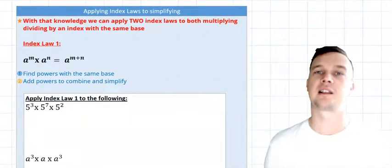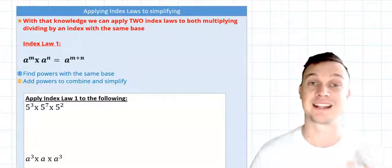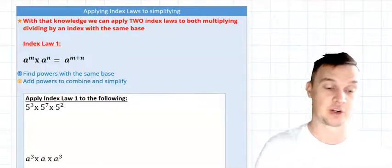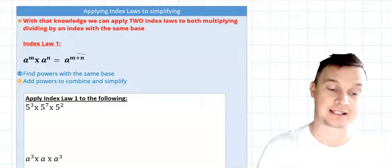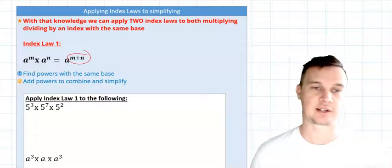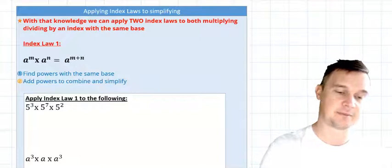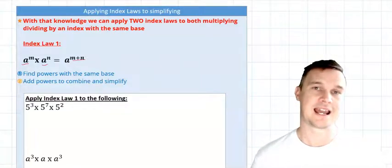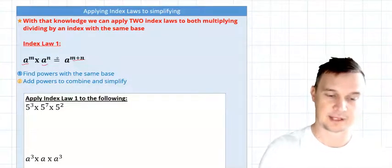So with that knowledge we can apply these two index laws by multiplying and dividing. And the first index law, so index law 1, states that a to the m times a to the n equals, or is the same as, a^(m plus n). Now we're using algebra terms there, might sound confusing, but basically it means that if you have the same base, you can simply add the powers together. This is when we're doing multiplication; you can add the powers together.